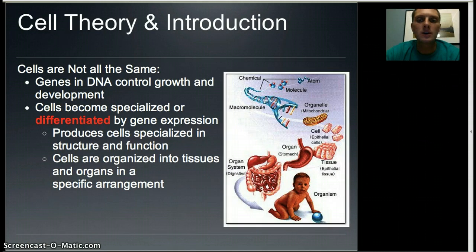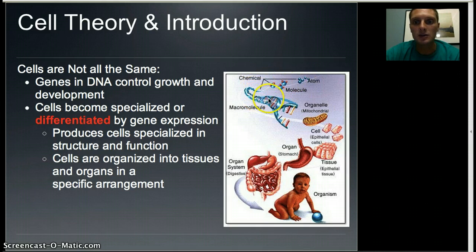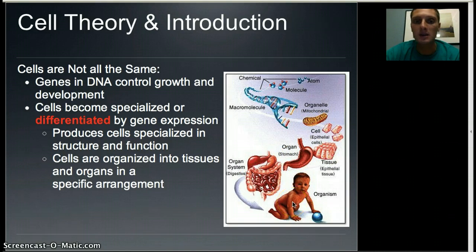When we talk about multicellular organisms such as humans, cats, dogs, or plants, there are many different parts that make them up. Starting at the most basic level, we have atoms, which form molecules and chemicals, which develop into organelles, then cells, tissues, organs, systems, and finally the organism. That's the hierarchy from basic building blocks to a complete organism.